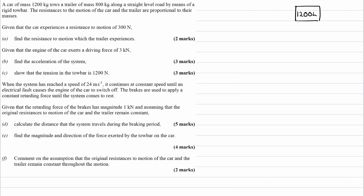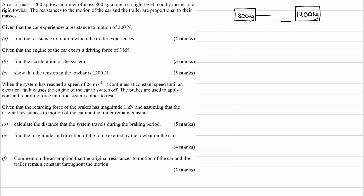Here is the car and there is the trailer. We have resistances to motion — the car experiences a resistance of 300 newtons, so it gets pulled backwards with a force of 300 newtons. I'm also going to draw tension forces: T in that direction and T in this direction. So the car is pulled backwards by the trailer, and the trailer is pulled forwards by the car. We're trying to work out the resistance to motion which the trailer experiences.